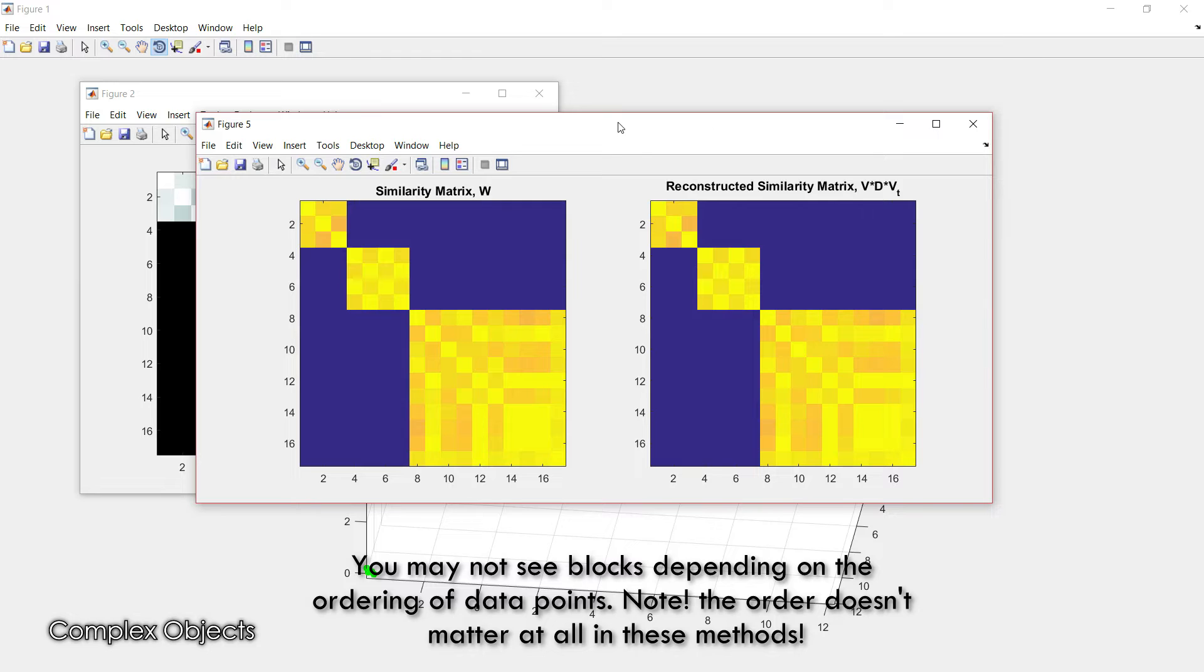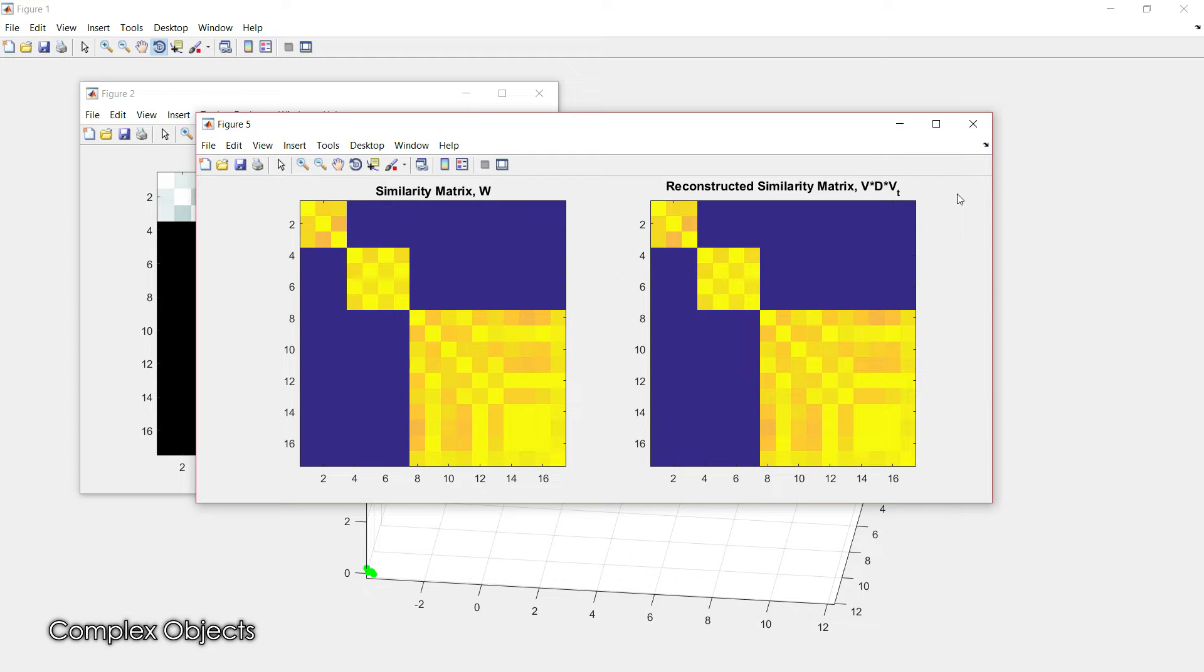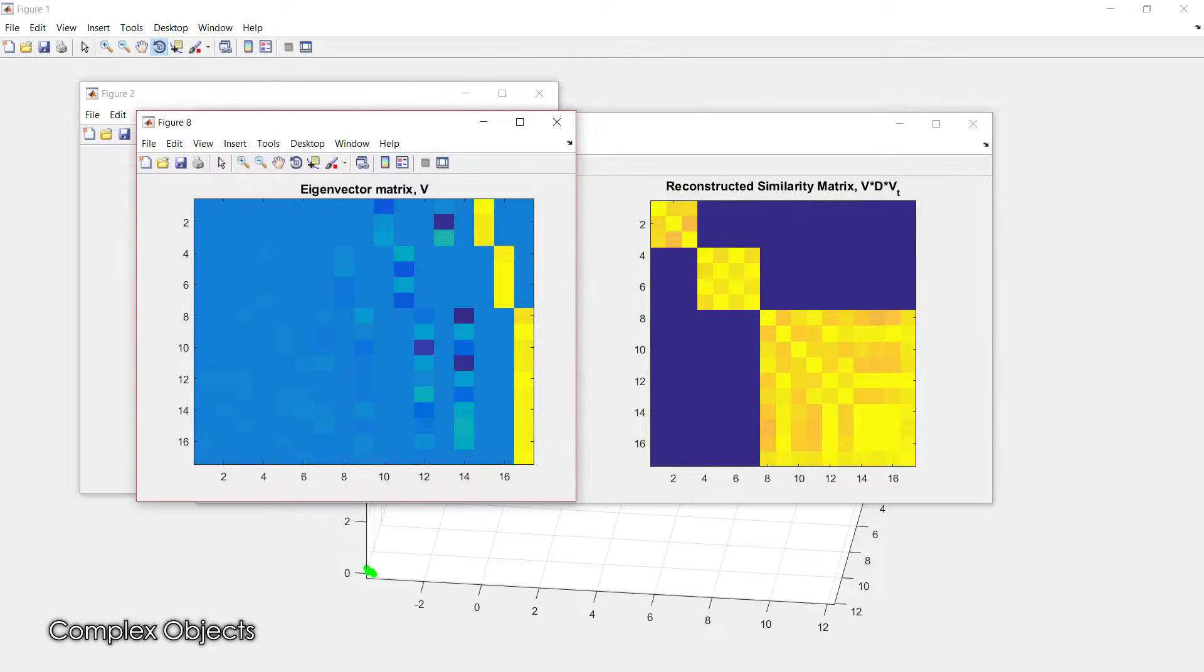On the left is the original similarity matrix. On the right I got the eigenvector decomposition VDV transpose and plotted that product just to show that they are in fact identical. It's important to know that you can decompose that matrix into a product of three which will give you the same matrix.